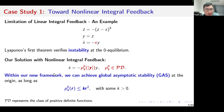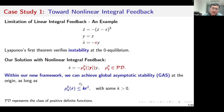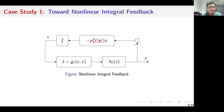Indeed, within our new framework to be discussed later, we can achieve global asymptotic stability at the origin as long as the non-linear function rho(s0) is less than or equal to some critical function. This is the resulting non-linear integral control system.